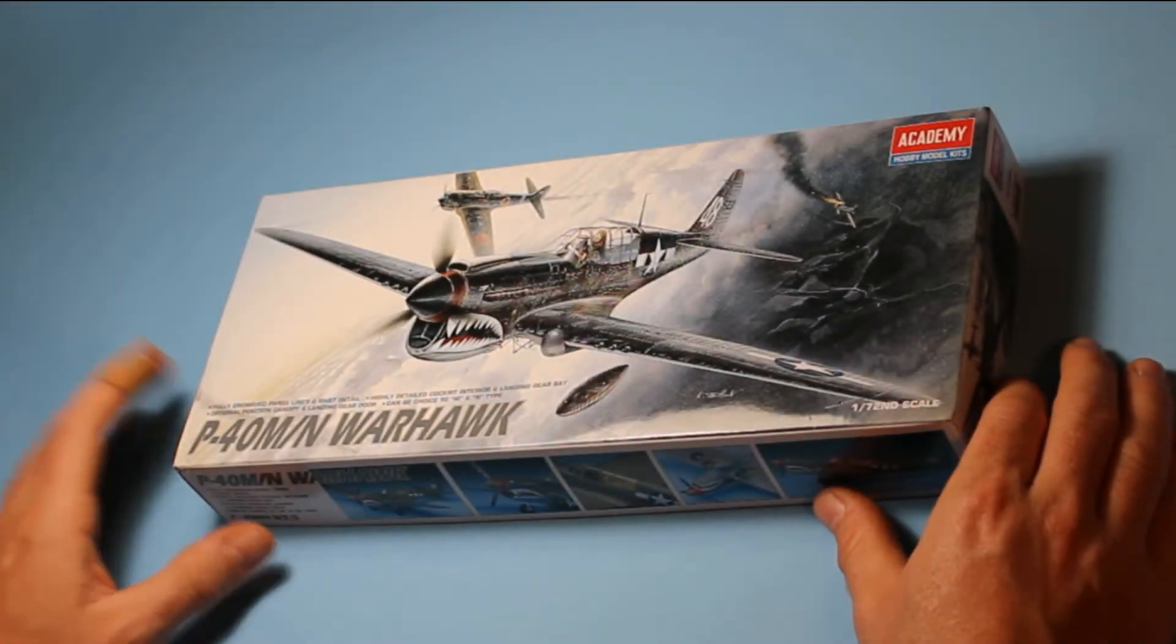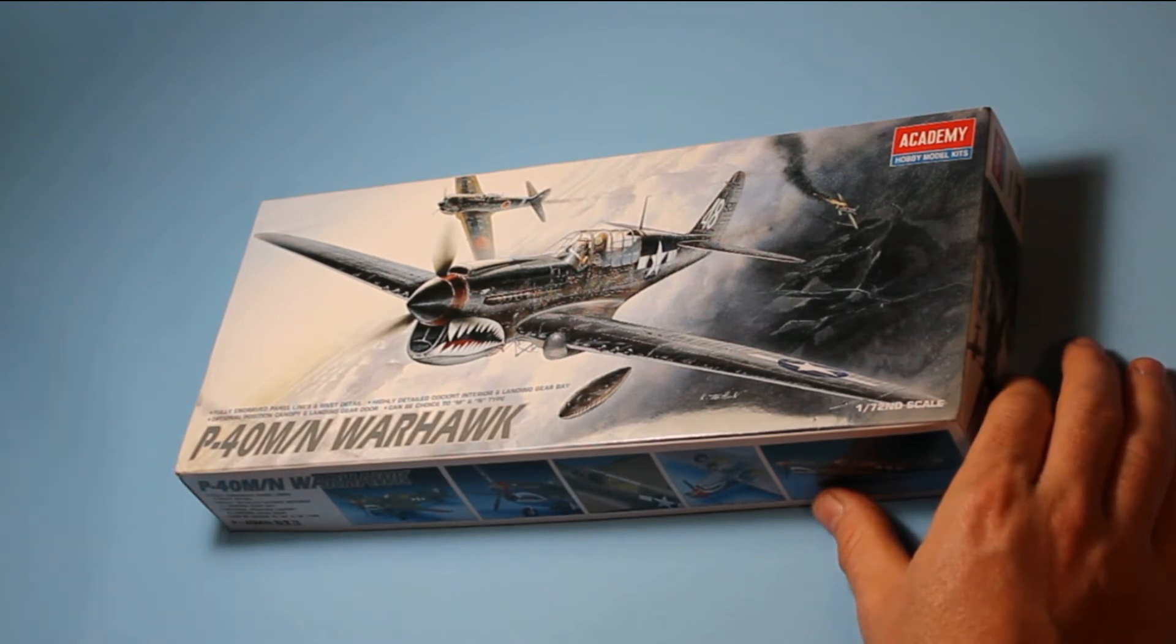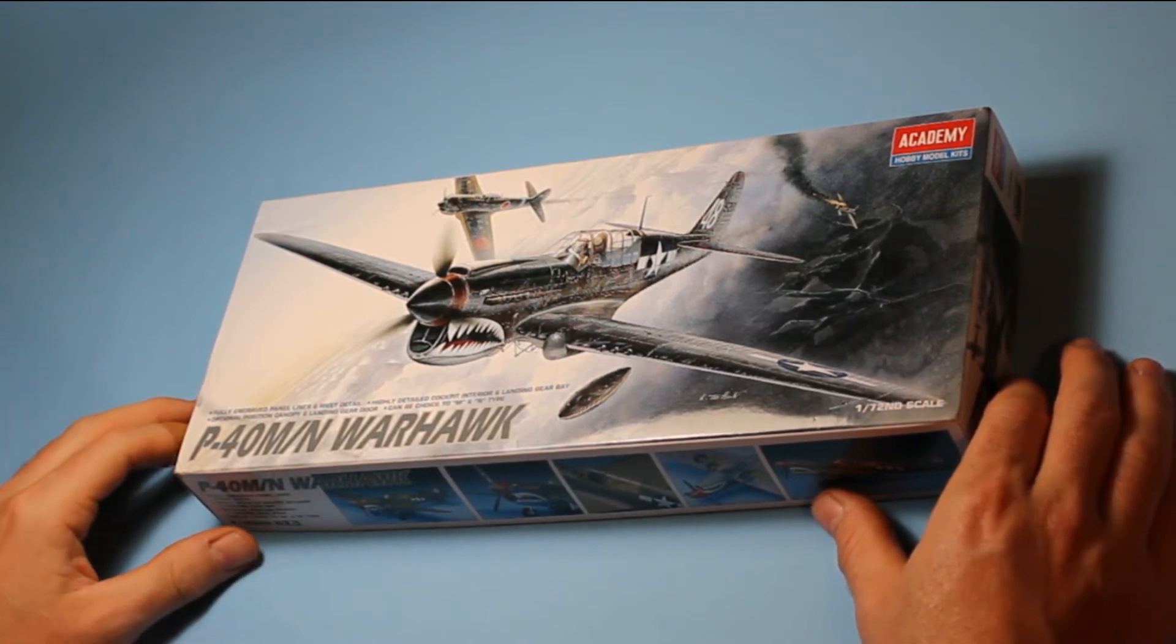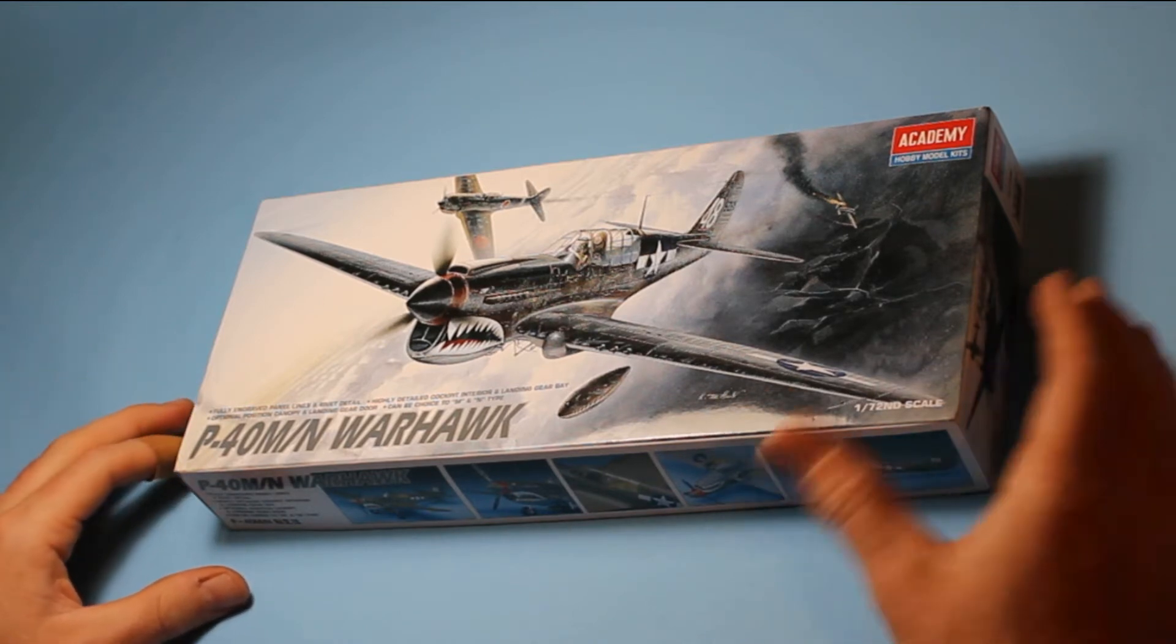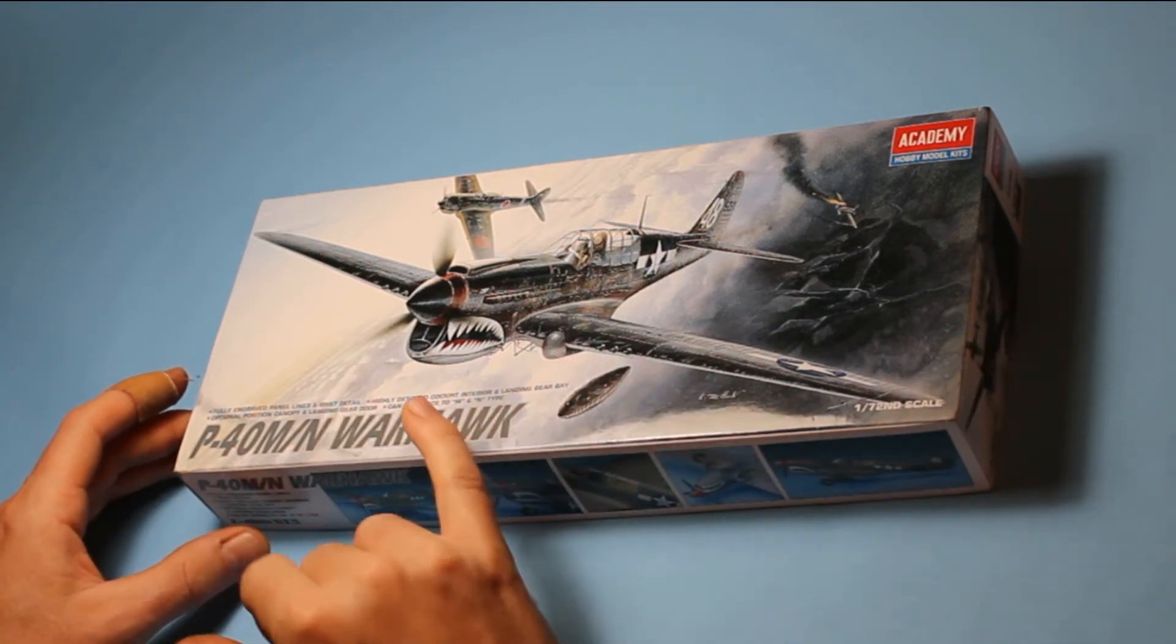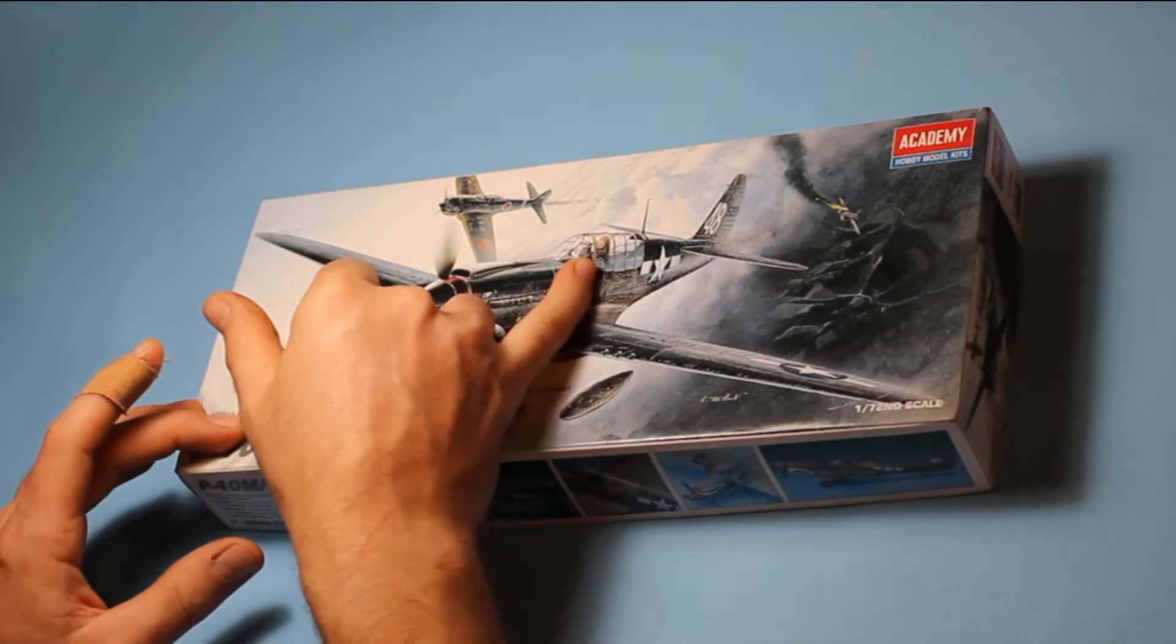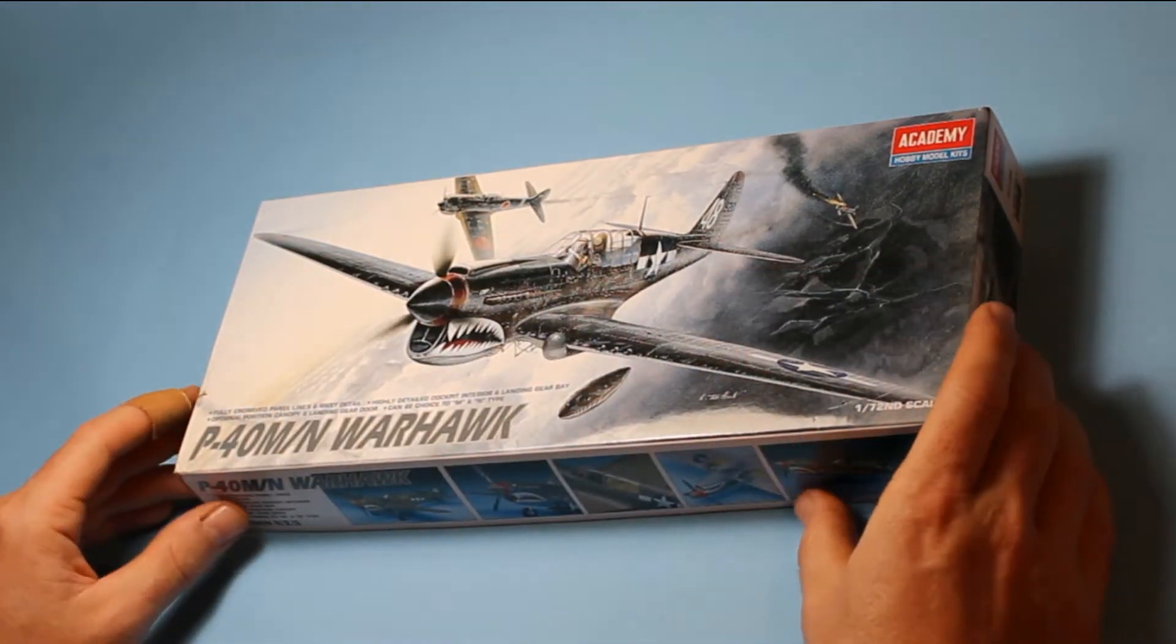This is the P-40M/N variant of the Warhawk. This is the P-40M/N of Warhawk in 1/72nd by Academy and it's one of the latest versions of the P-40 with the late version canopy where it had more visibility and a longer fuselage. So it's a nice variant and starting with the instructions.